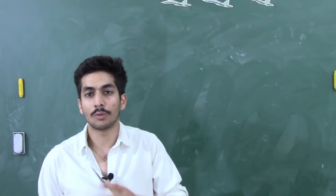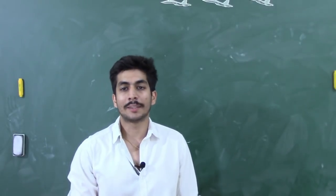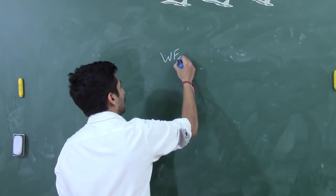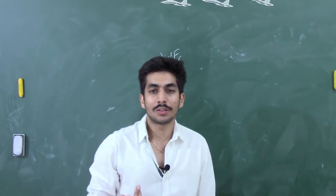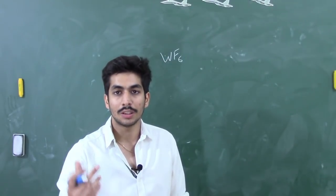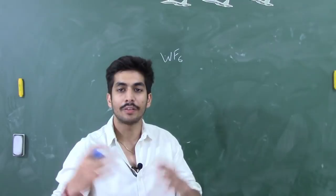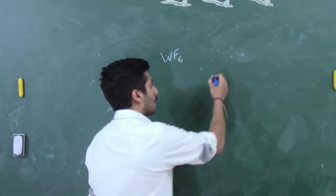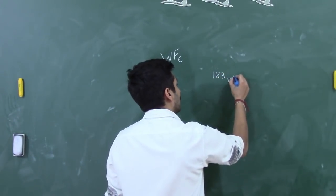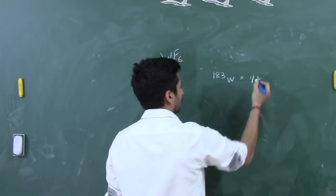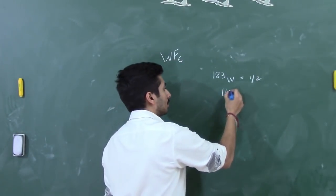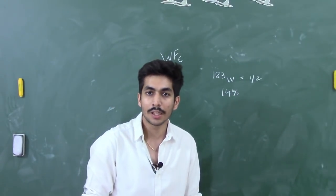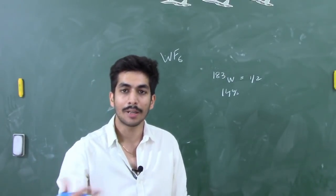To take a simple example, I'll take WF6, a tungsten compound. In WF6, tungsten-183 is 14% abundant. There are different isotopes of tungsten, but 183W is NMR active and has a spin of 1/2. It is only 14% abundant; the remaining 86% of tungsten isotopes are NMR inactive.